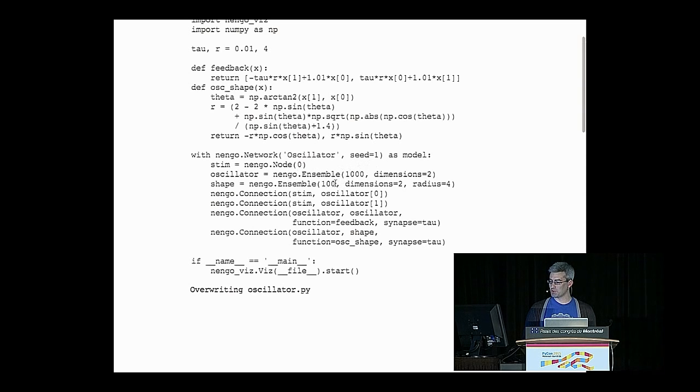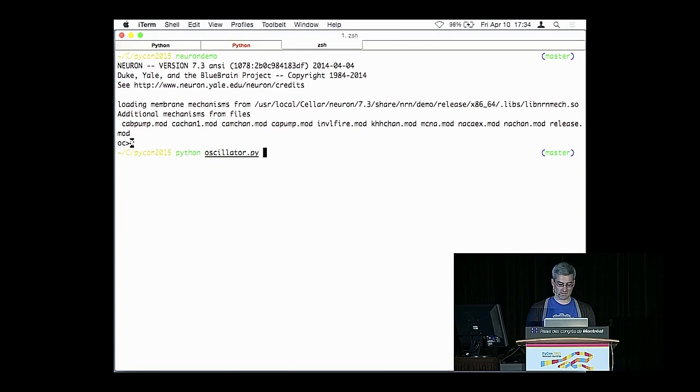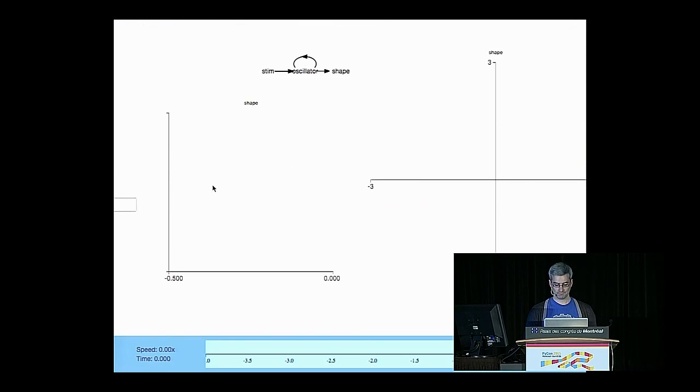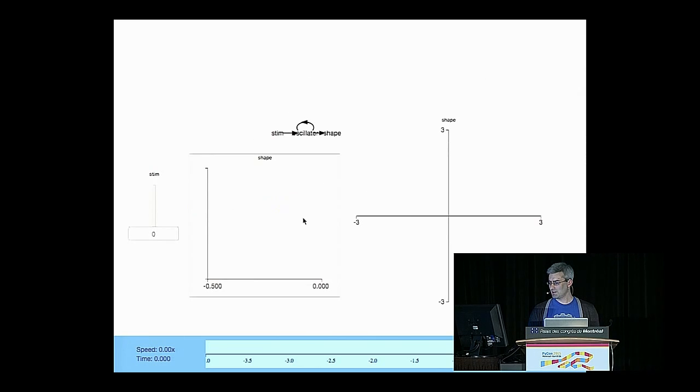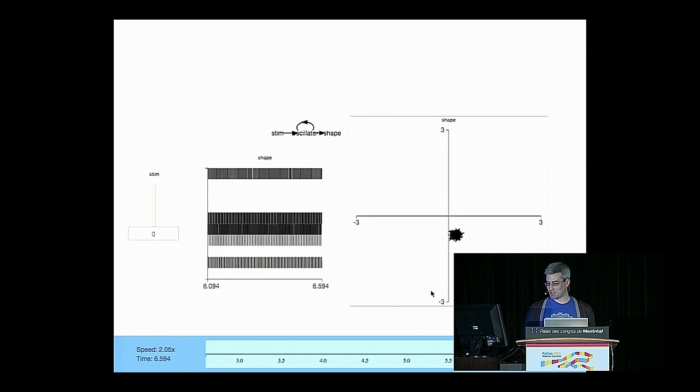So what's happening in this model isn't super important, but just know that there are two ensembles here. One with a thousand neurons, one with a hundred neurons. This one's connected to itself. That one's connected to that ensemble. And I'll start up the visualizer that we've been working on. So in here, we get kind of a miniature version of our network. So our stim node, the oscillator population, the shape population. If I press play, it starts simulating. You can see that this is indeed working in continuous time. Time is just flowing across that x-axis.